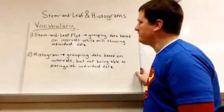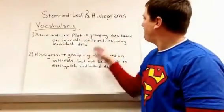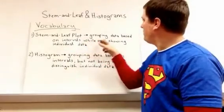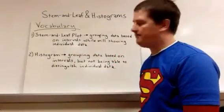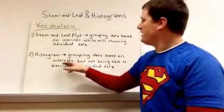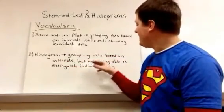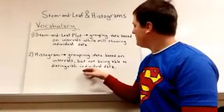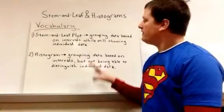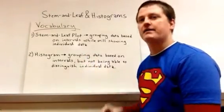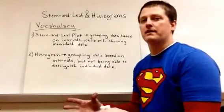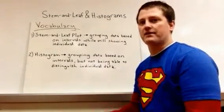Vocabulary for this lesson: A stem-and-leaf plot is grouping data based on intervals while still showing individual data. A histogram is grouping data based on intervals but not being able to distinguish between individual data. This is like a bar graph except we're grouping things that are close together.